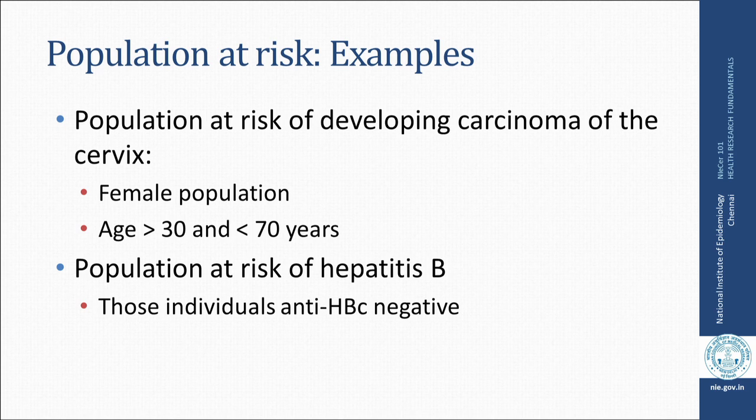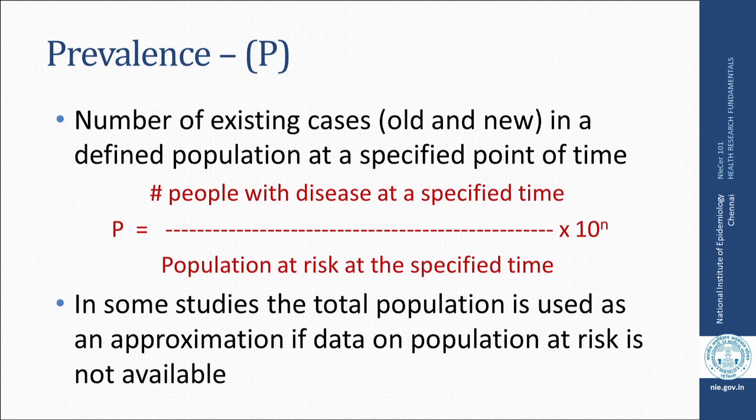For example, the population at risk of developing carcinoma of the cervix is the female population in the age group of 30 to 70 years. A population at risk of hepatitis B are those individuals who are at risk of developing hepatitis B but were negative.